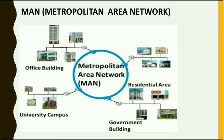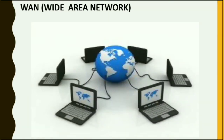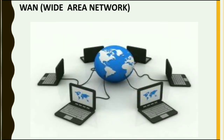WAN stands for Wide Area Network. A WAN is a computer network that spans a wide geographical area. A WAN may be spread across cities, states, and countries. A WAN is formed by connecting various LANs and MANs. The Internet is the best example of a WAN.